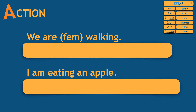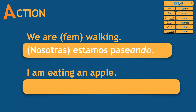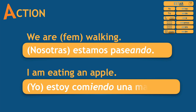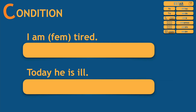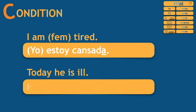For action: We are walking, for feminine — Nosotras estamos paseando. I am eating an apple — Yo estoy comiendo una manzana. Condition: I am tired, for feminine — Yo estoy cansada. Today he is ill — Hoy él está enfermo.